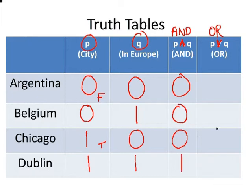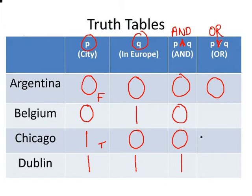Now we're going to look at the OR condition — the place has to fulfill one of the two criteria: it has to be a city or it has to be in Europe. Is Argentina a city? No. Is it in Europe? No — zero. Is Belgium a city? No. Is it in Europe? Yes — give that a one. Chicago — is it a city? Yes, it's not in Europe but it is a city — one. And Dublin is a European city — give that a one.